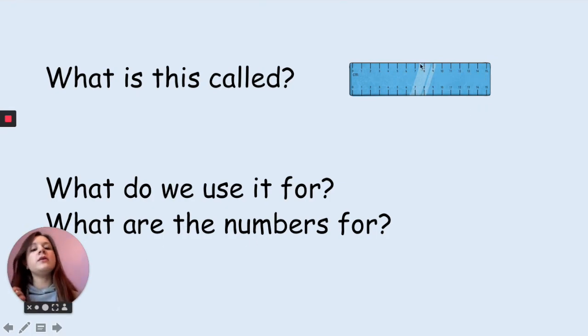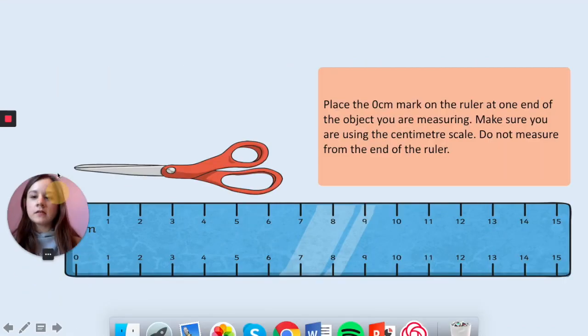Pause the video to tell your adult what this blue rectangle is here, what do we use it for, and tell your adult if you know what the numbers are for. This is our ruler and we use it for measuring the length of different objects. The numbers tell us how many centimeters or millimeters or inches something is. We'll be using the top ones for centimeters.